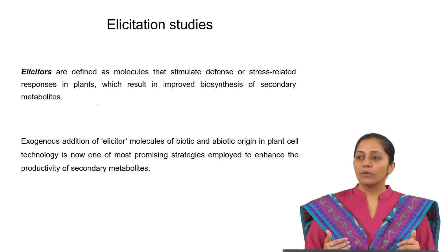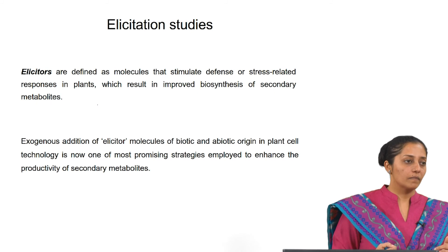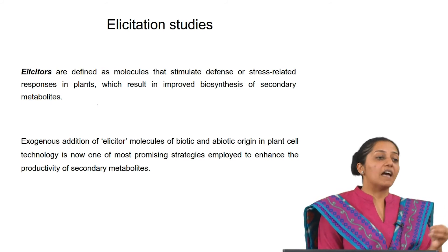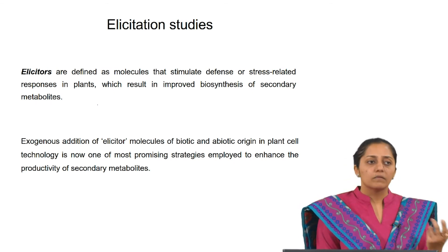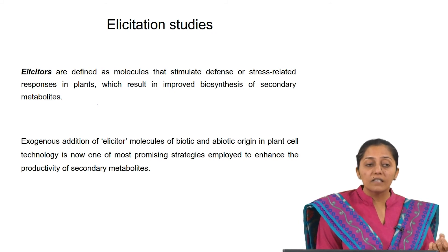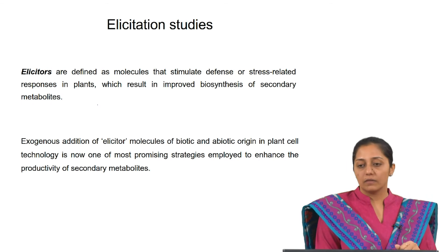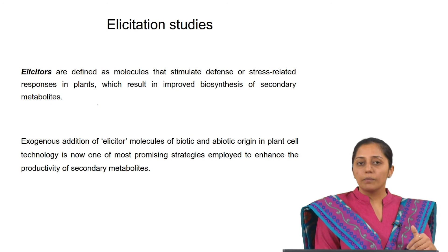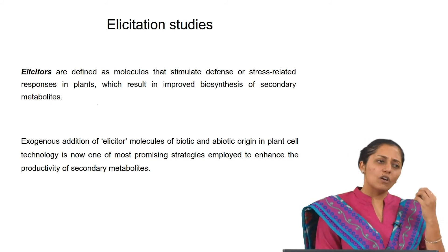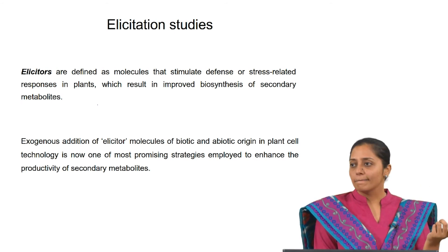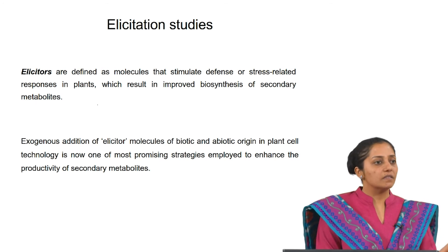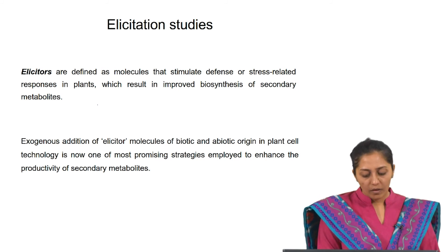Examples of abiotic elicitors include temperature, salts, and heavy metals — these are all stress enhancers. Biotic elicitors can be fungal components and their cell wall components such as chitin. Elicitor-induced effects in plant cells include induction of calcium metabolism. Calcium has a crucial role in the CaM pathway, inducing certain proteins and transcription of certain enzymes involved in the desired secondary metabolic pathway. Calcium is used as a second messenger in cells and is involved in many signal transduction pathways in plants.